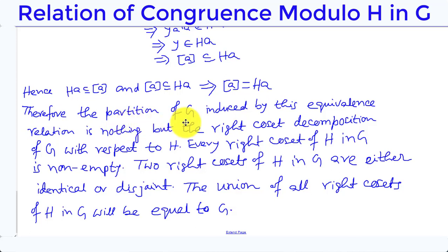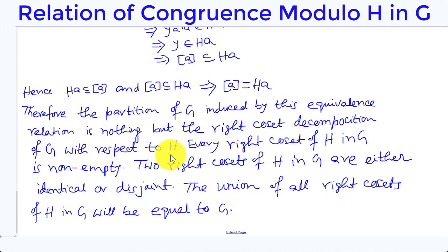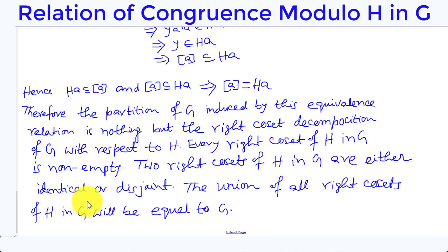Therefore, the partition of G induced by this equivalence relation is nothing but the right coset decomposition of G with respect to H. Every right coset of H in G is non-empty, two right cosets of H in G are either identical or disjoint, and the union of all right cosets of H in G equals G.